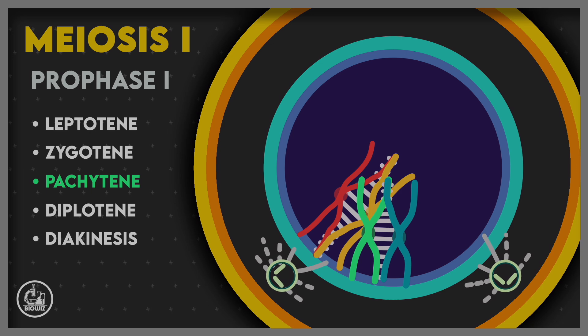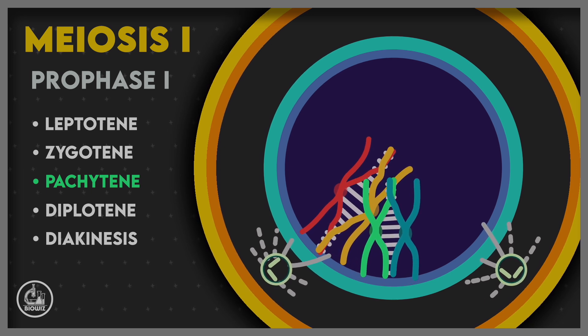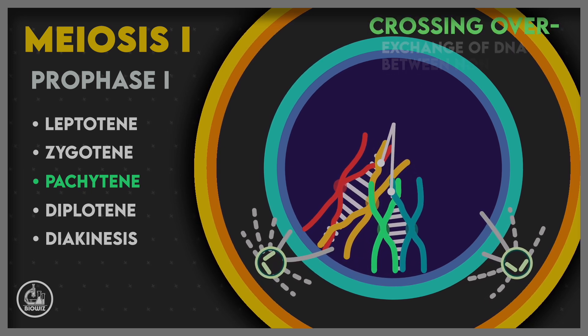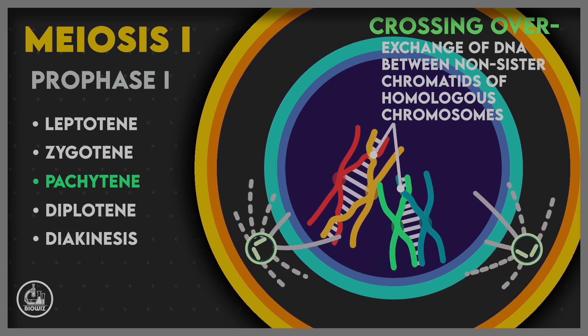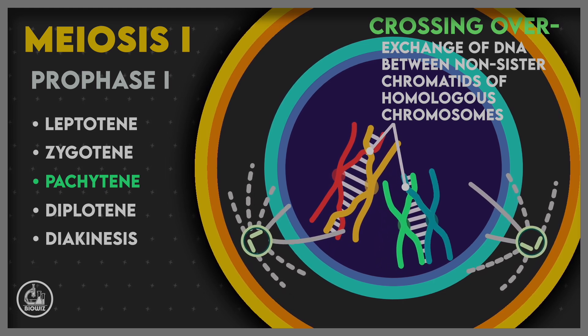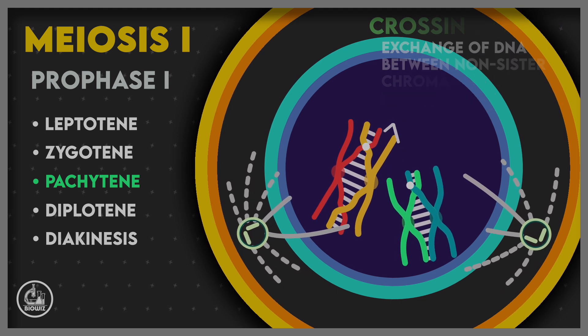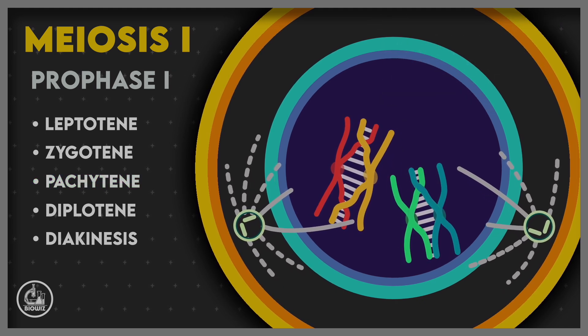In pachytene, the tetrads become clearly visible due to further condensation of chromatin. Pachytene is marked by crossing over, in which exchange of DNA occurs between the non-sister chromatids of homologous chromosomes.